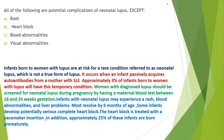Infants born to women with lupus are at risk for a rare condition referred to as neonatal lupus, which is not a true form of lupus. It occurs when an infant passively acquires autoantibodies from a mother with SLE, and approximately 2-3% of infants born to women with lupus will have this temporary condition. Women with diagnosed lupus should be screened for neonatal lupus during pregnancy by having a maternal blood test between 18-24 weeks of gestation. Infants with neonatal lupus may experience a rash, blood abnormalities, and liver problems, most resolving by 6 months of age. Some infants develop potentially serious complete heart block, treated with pacemaker insertion, and approximately 25% of these infants are born premature.